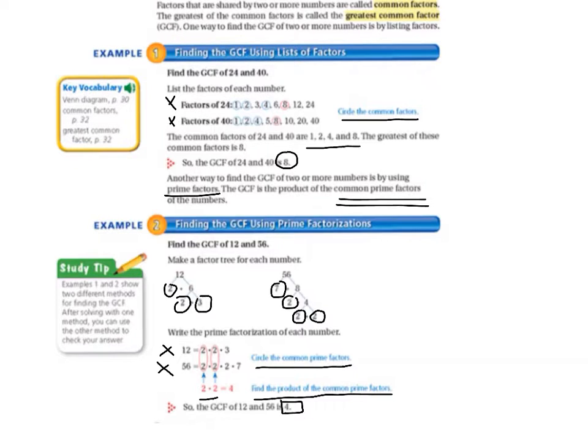Let's read our study tip off to the left. It says examples 1 and 2 show two different methods for finding the greatest common factor. After solving with one method, you can use the other method to check your answer.